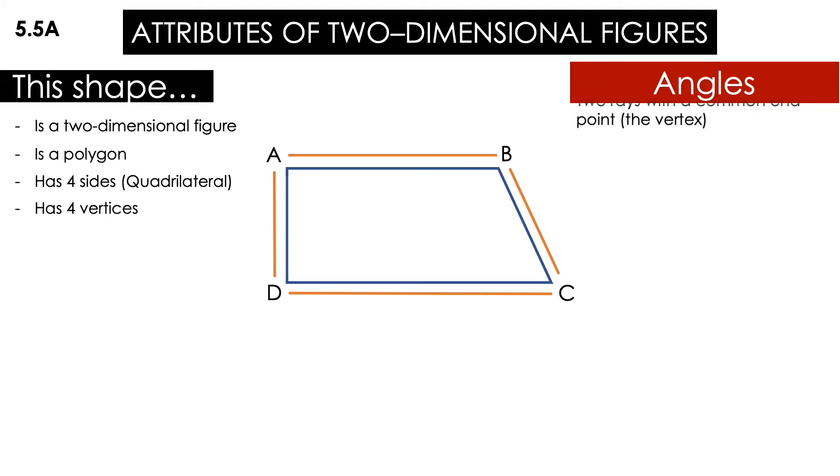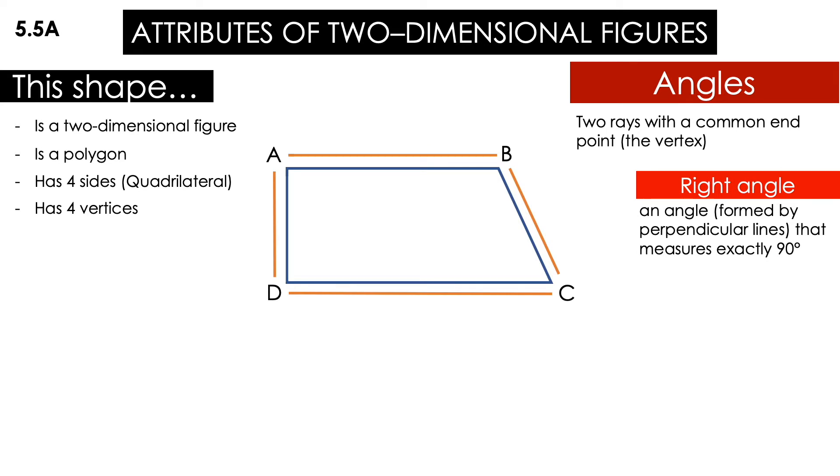Now, let's talk about the angles. These are two rays with a common end point. The common end point is the vertex. Of course, if it has four sides, that means that it will have four vertices, and it will have four angles. But I want to talk first about the type of angles that we have. The first one is the right angle. That is an angle formed by perpendicular lines that measures exactly 90.